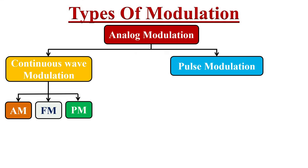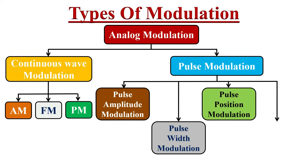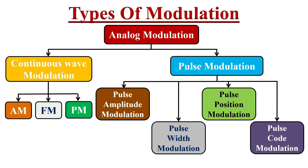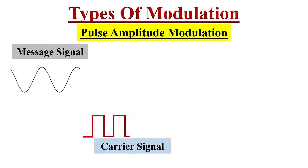Now let's see the different types of pulse modulation techniques. Pulse modulation is mainly divided into four types: pulse amplitude modulation, pulse width modulation, pulse position modulation, and pulse code modulation. You must remember that pulse modulation is an analog modulation technique, so the message signal is an analog signal, but the carrier signal is a pulse of a finite frequency.